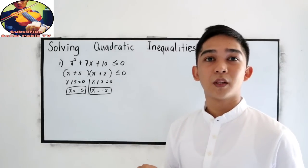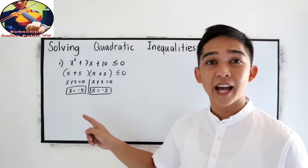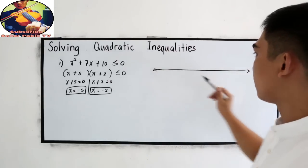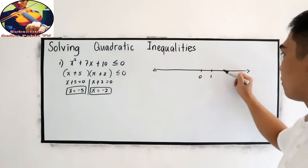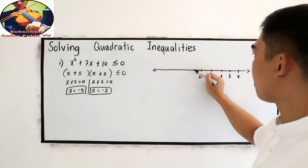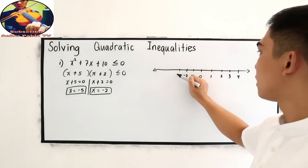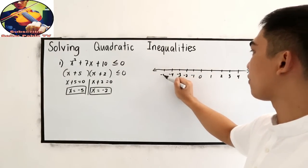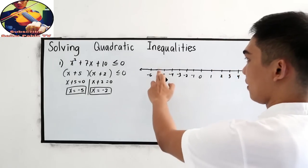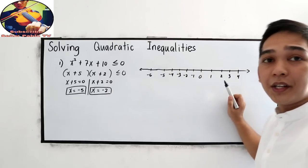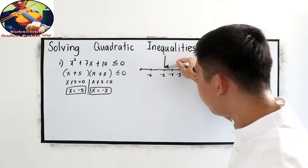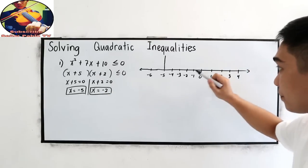Next step: you need to plot on our number line. We have 0, positive 1 through 4, and the negative numbers: negative 1, negative 2, negative 3, negative 4, negative 5, negative 6. After setting up the number line, locate negative 5 and negative 2, and mark them on the number line.